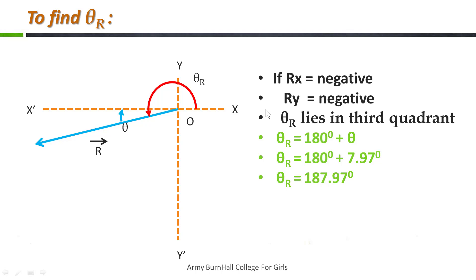To summarize the method: we calculated all x-components, then all y-components, then the sum of x-components to get Rx, the sum of y-components to get Ry, the magnitude using √(Rx² + Ry²), the direction using theta = tan⁻¹(Ry/Rx), and finally checked which quadrant theta lies in. We now have an accurate value for both magnitude and direction.